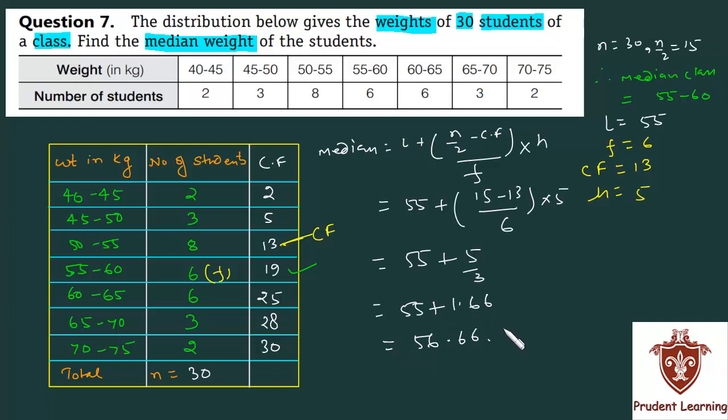This is actually in kg, because it is given in kg. So finally, you can write therefore, or hence, the median weight of the students is 56.66 kgs.